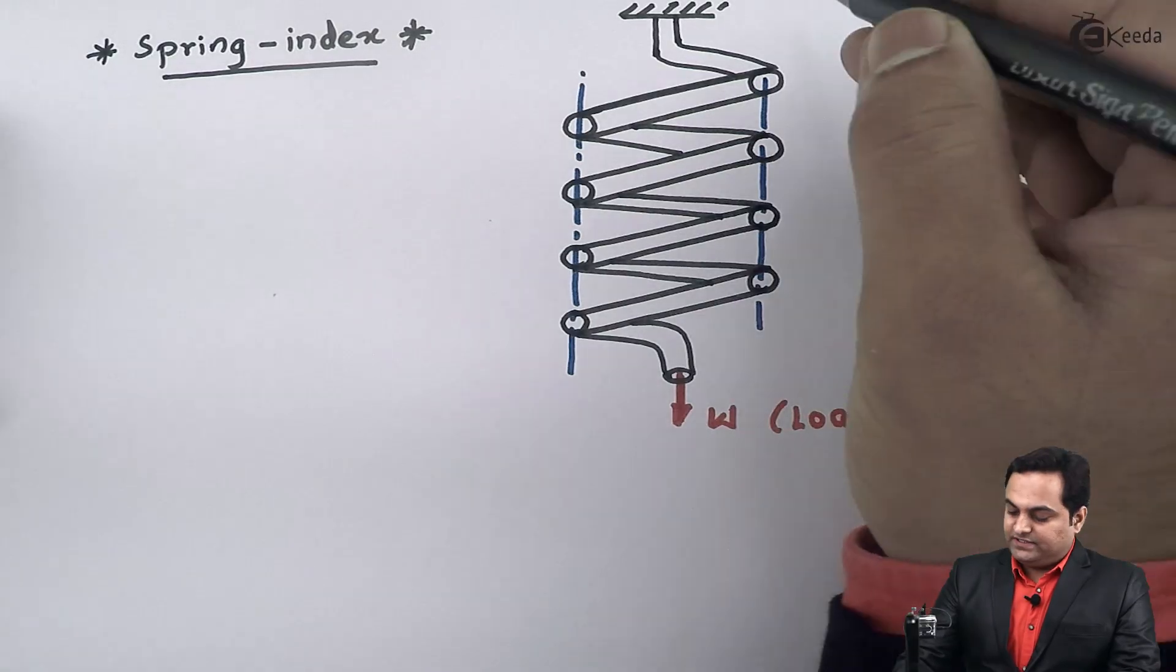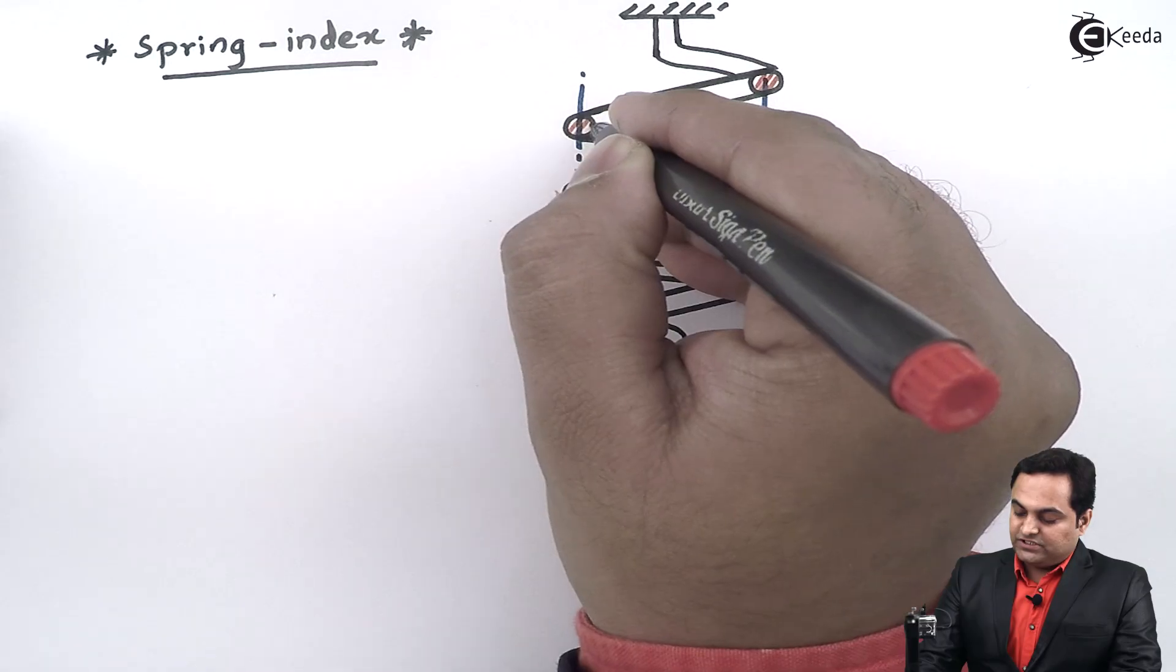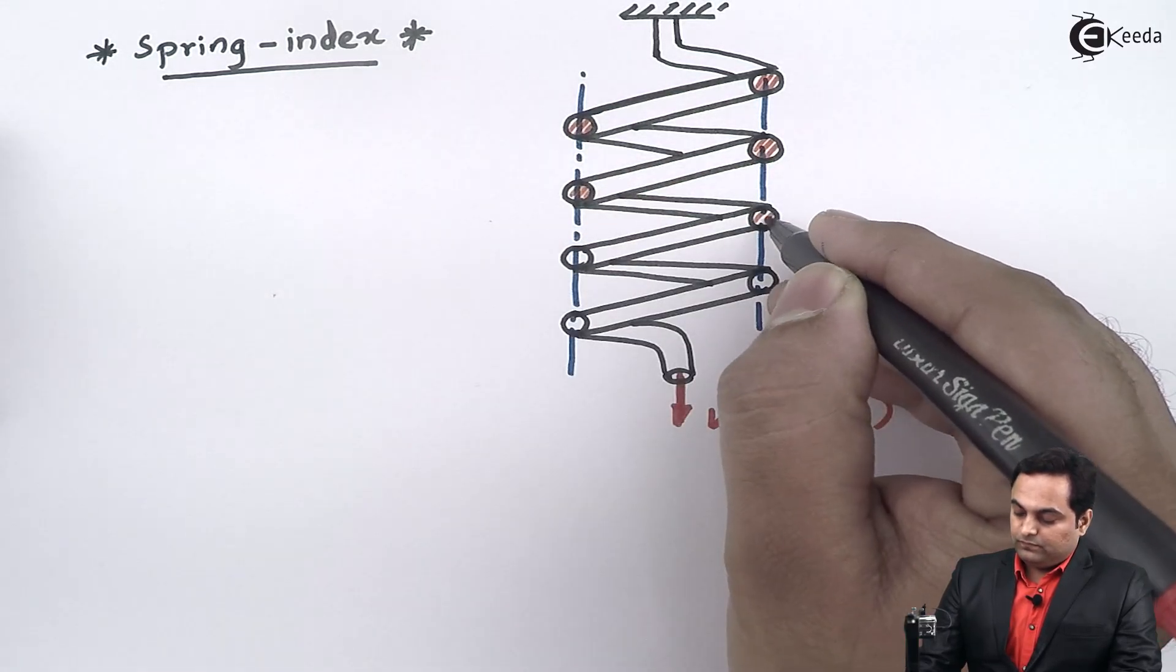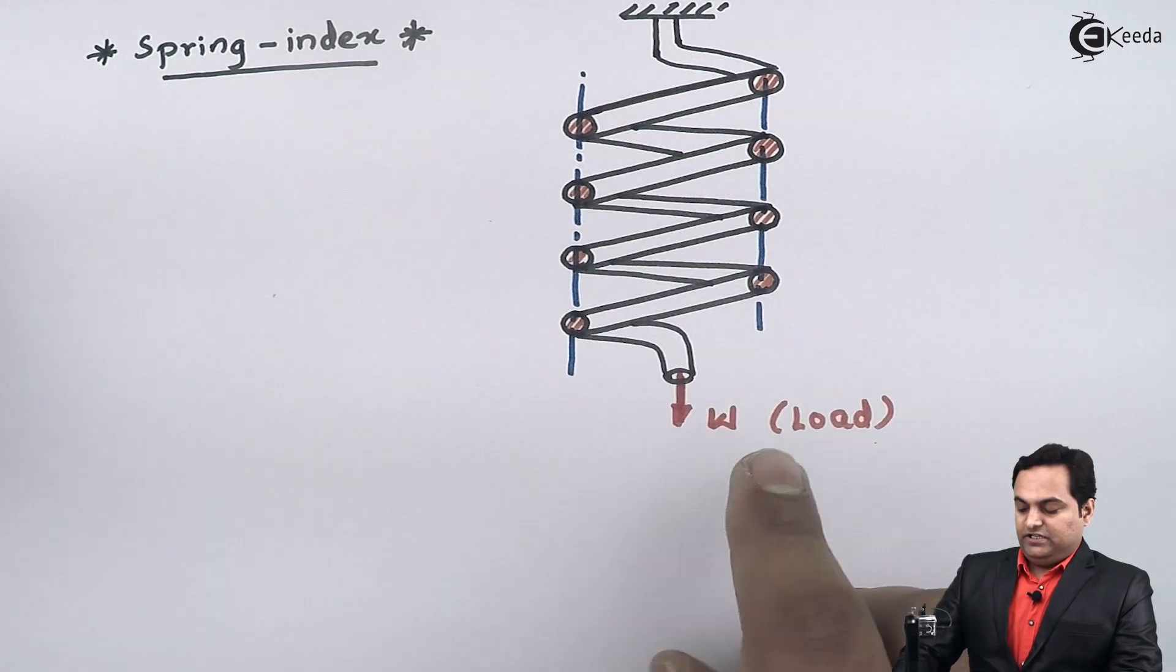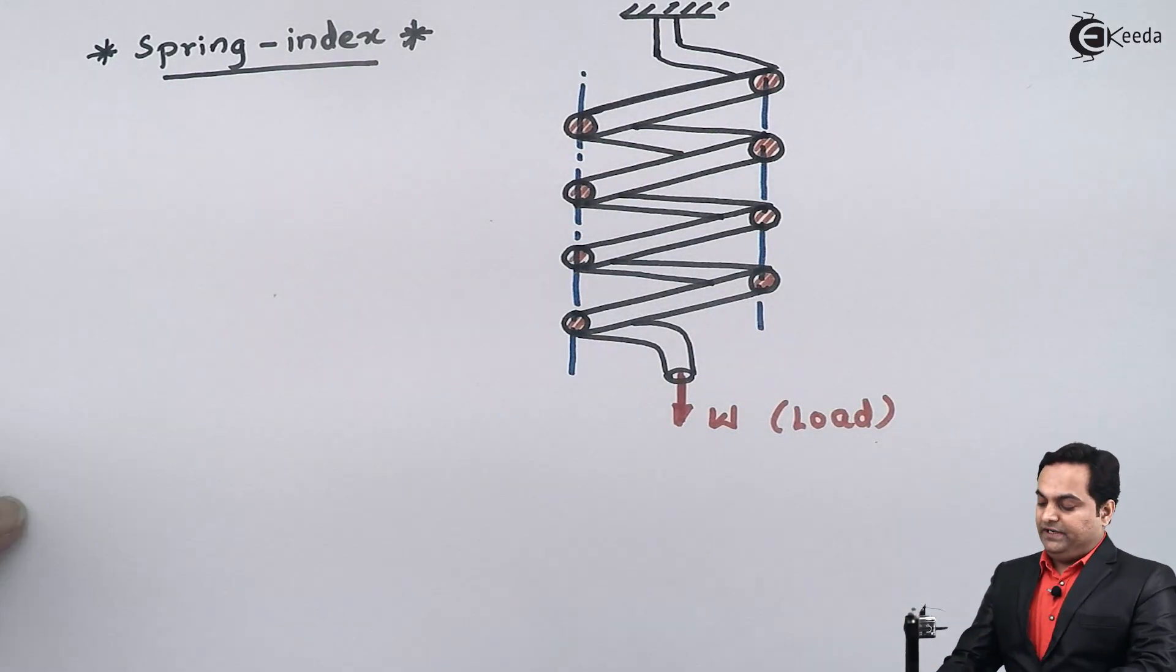In this spring, we can see there is a small diameter called the wire diameter. When this spring is made, it is made with the help of this small diameter wire.